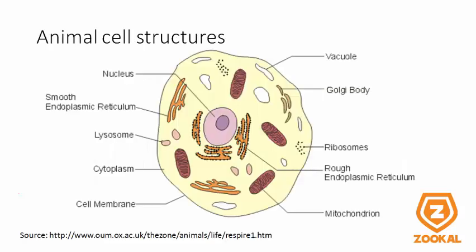Here is a diagram showing an animal cell, and you should pay attention to and know the nucleus, smooth endoplasmic reticulum, cytoplasm, cell membrane, mitochondrion, rough endoplasmic reticulum, ribosomes, Golgi body, and vacuole. We will be covering each of these structures in greater detail.